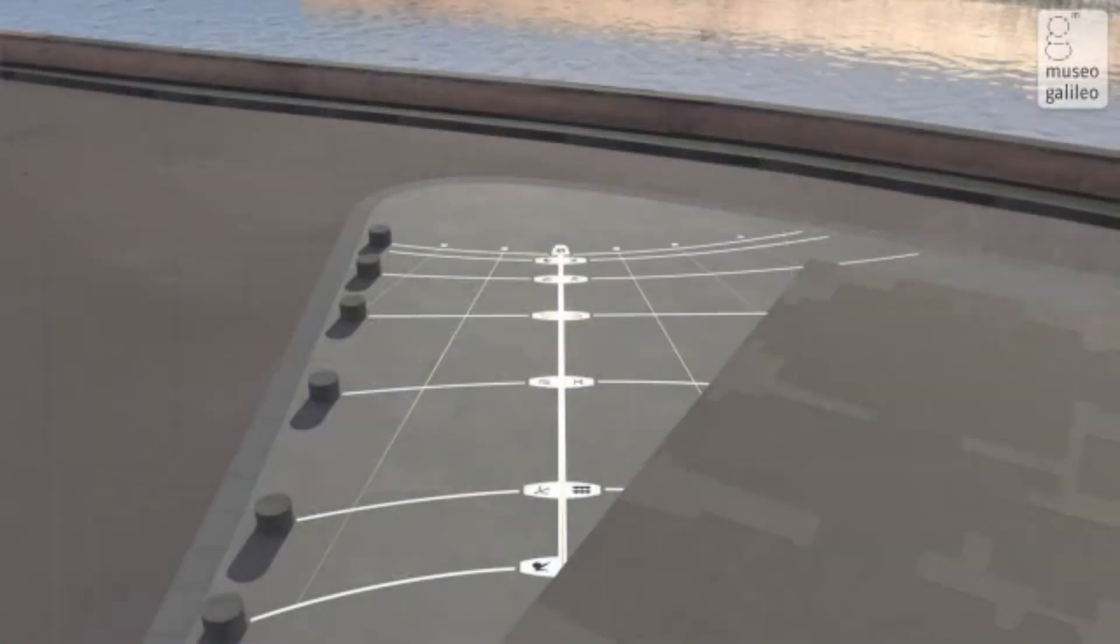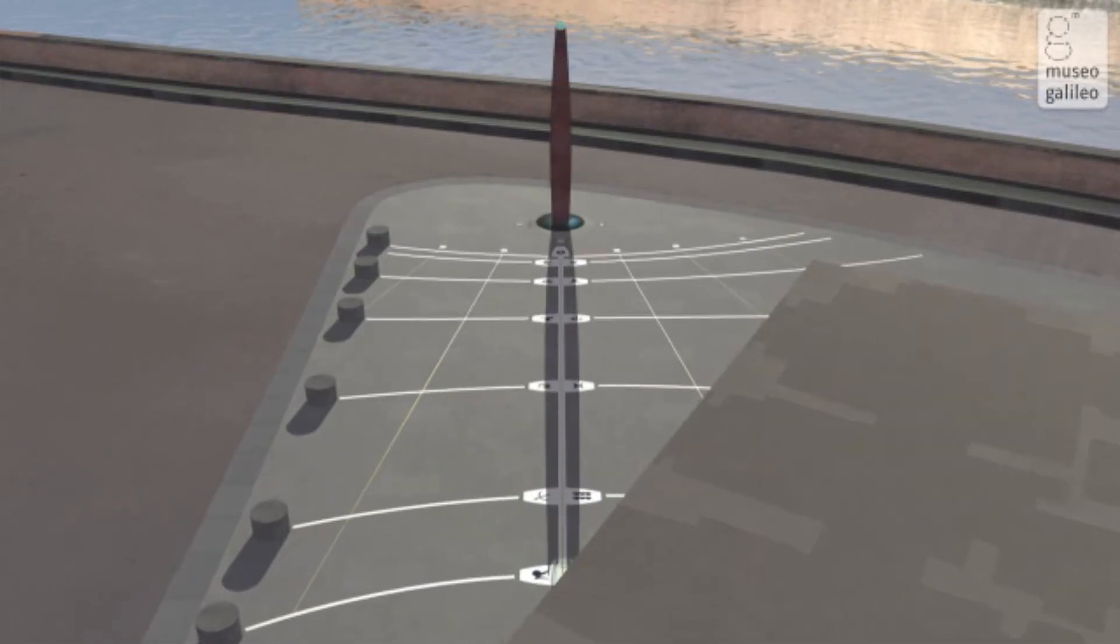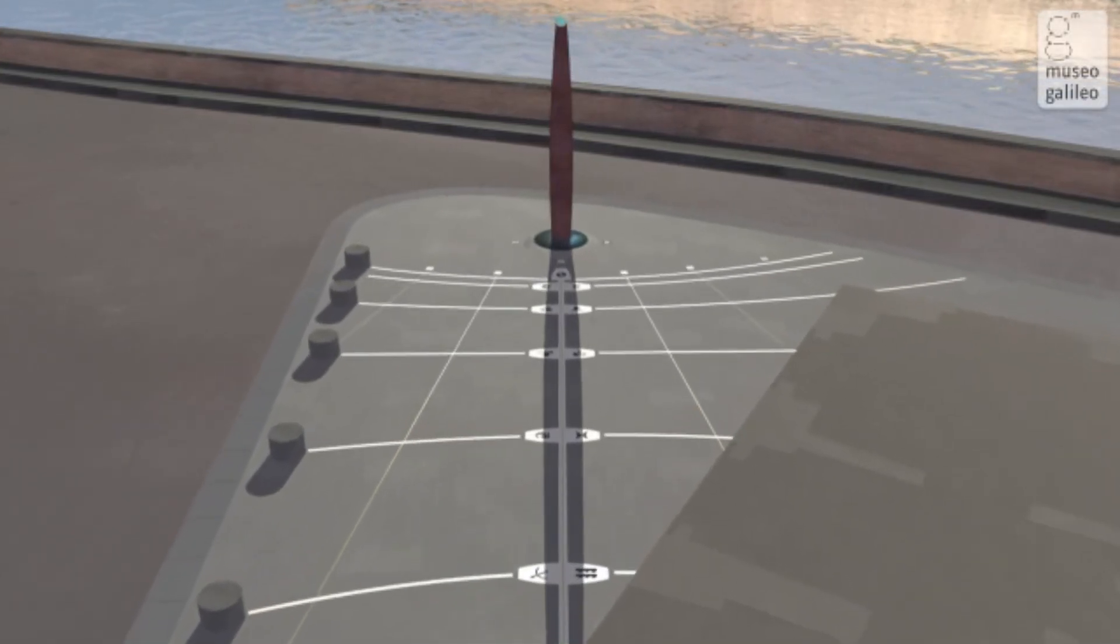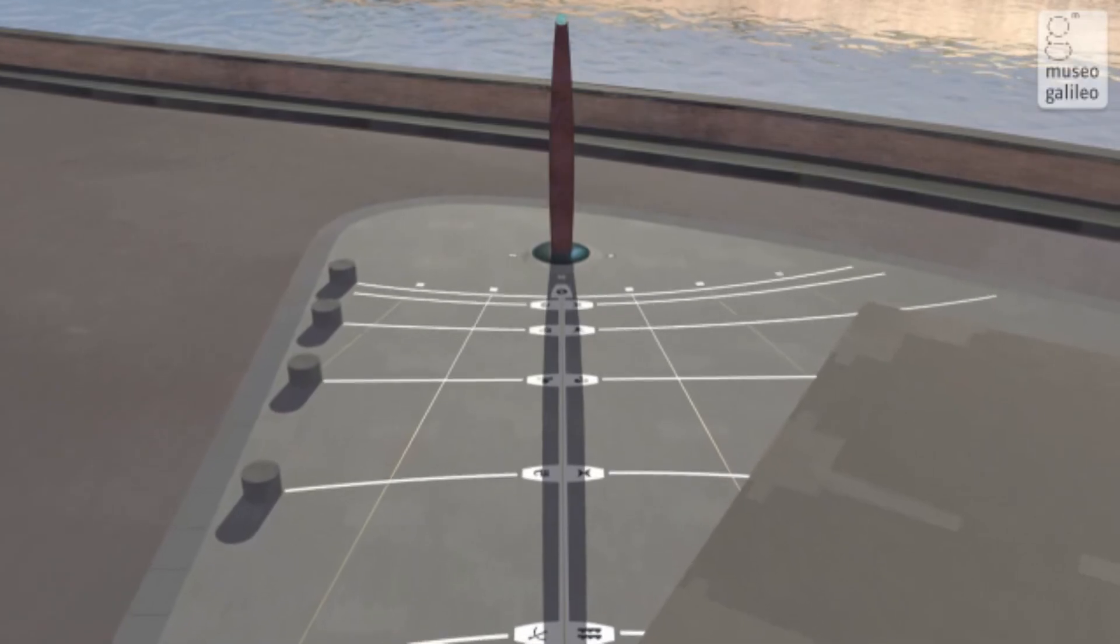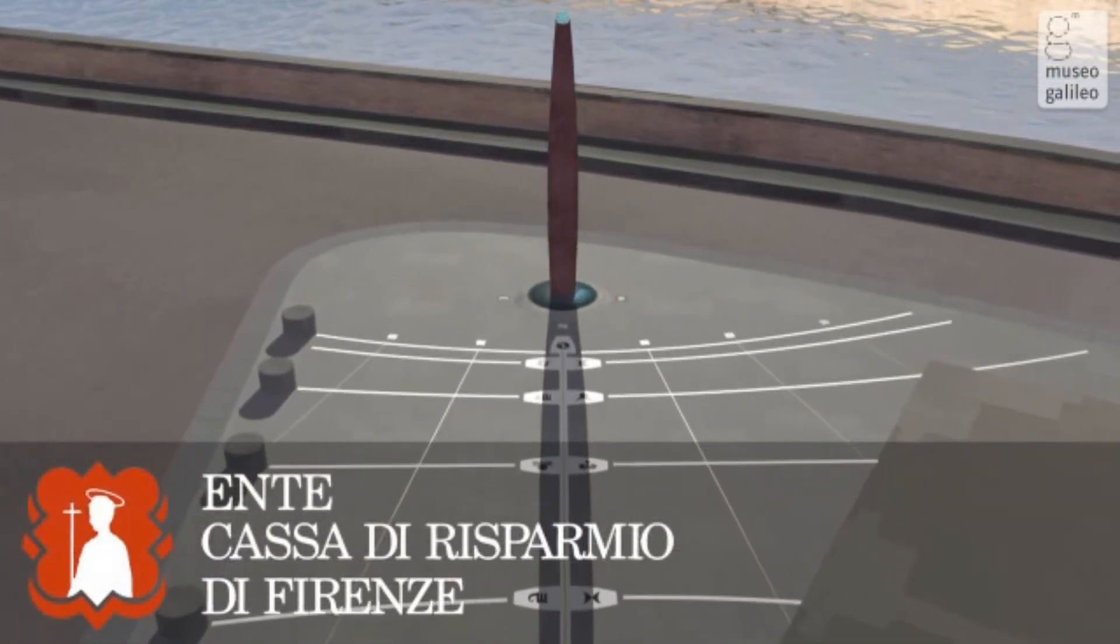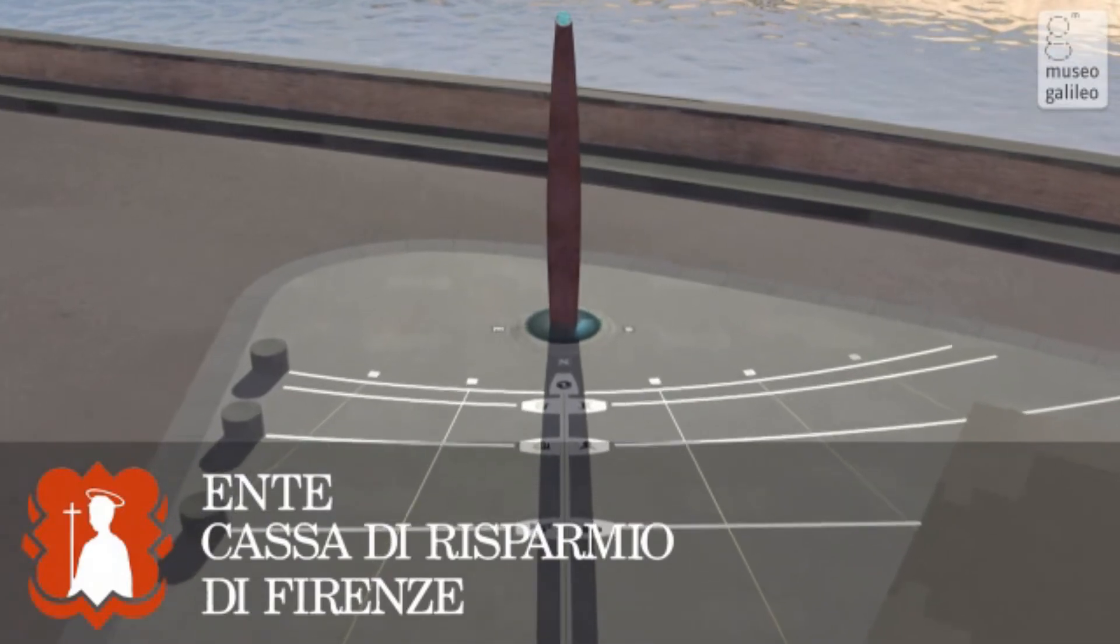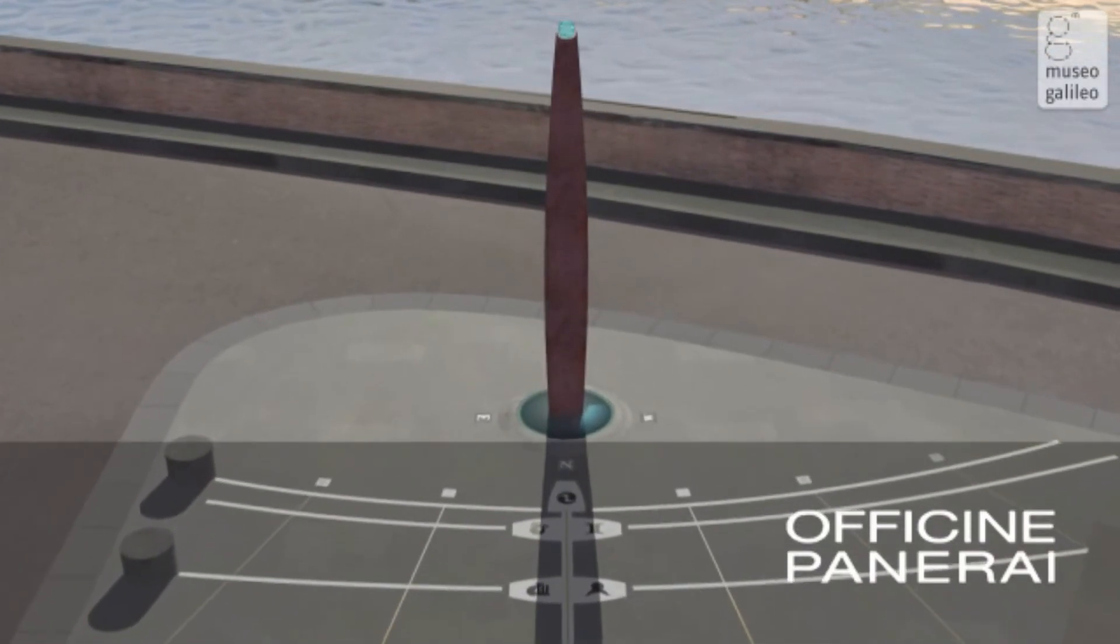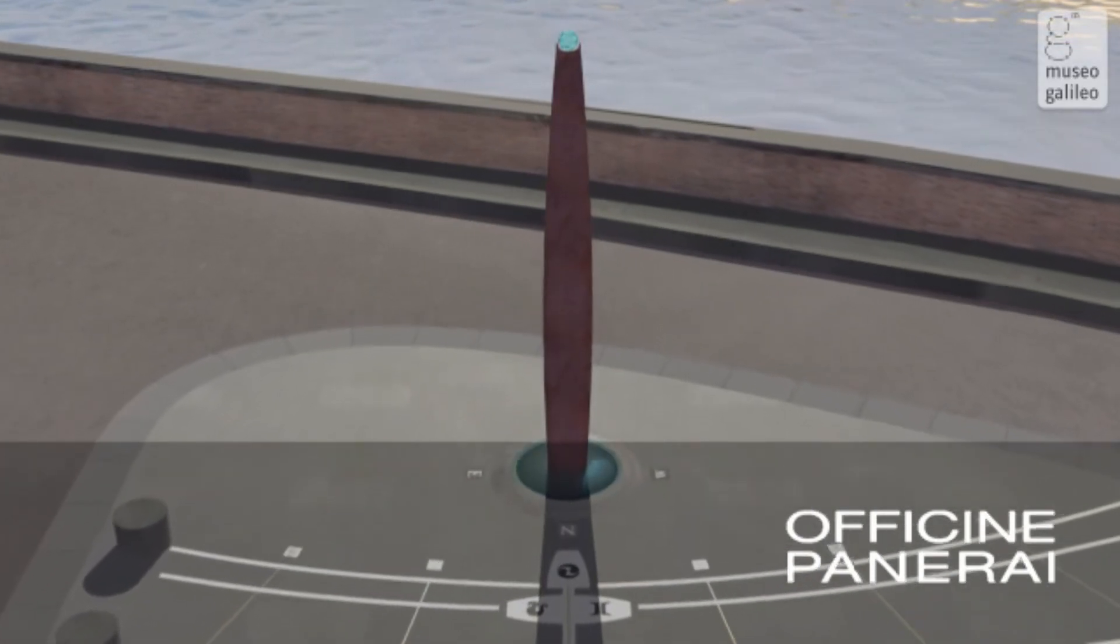The sundial of the Museo Galileo is made up of a large quadrant traced on the pavement and a huge bronze stele functioning as a gnomon. This sundial was built in 2007 according to the design by Luis Schnabel and Filippo Camarotta with a contribution by Ente Casa di Risparmio di Firenze. It has been restored in 2015 thanks to the generous support provided by Officine Panerai.